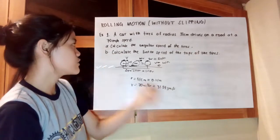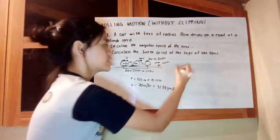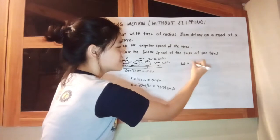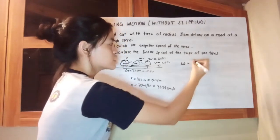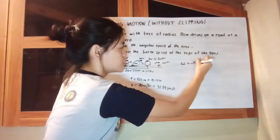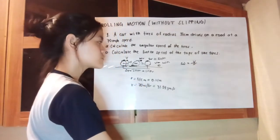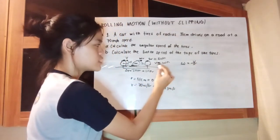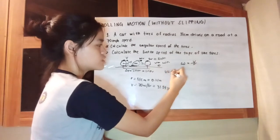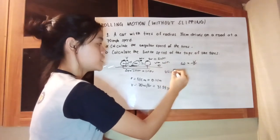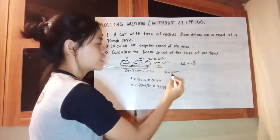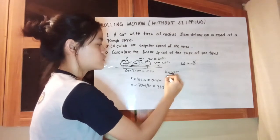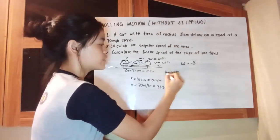Let's first solve for the angular speed of the tires. The angular speed is equivalent to velocity over radius. Because as we can see here, velocity is equivalent to the angular speed times the radius. Since we are looking for the angular speed, we are just going to divide both sides by radius.